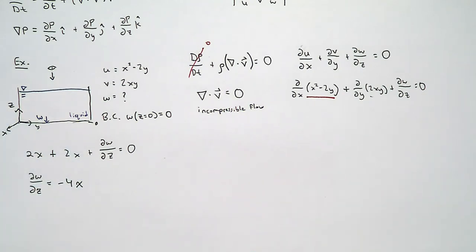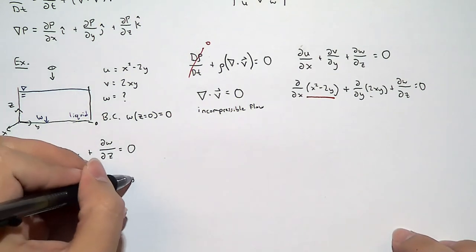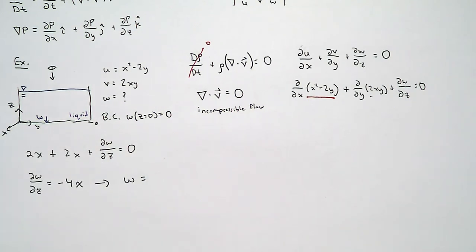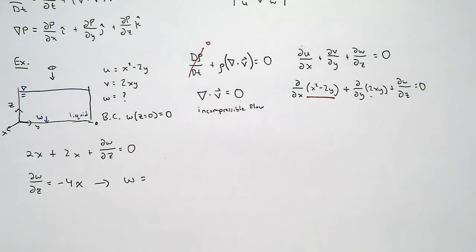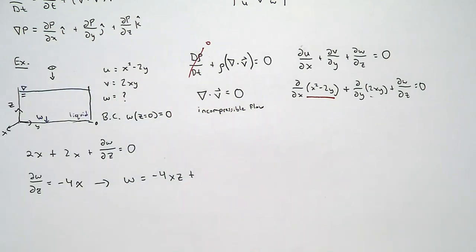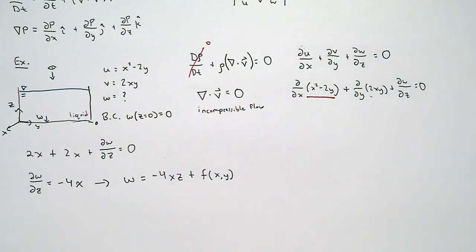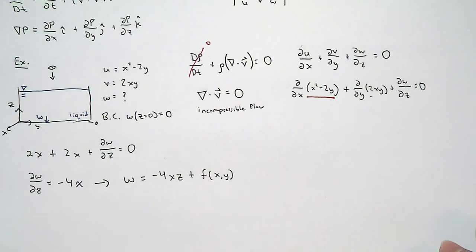This is a very simple first-order partial differential equation. When we integrate a partial derivative, we assume that everything that is not Z is a constant. So the integral gives W = −4xz plus a function of the other variables. When we integrate partial derivatives, the difference from ordinary derivatives is that instead of a constant value, we have a function of the other variables — in this case, a function of x and y, but not z. We find that function by applying boundary conditions.